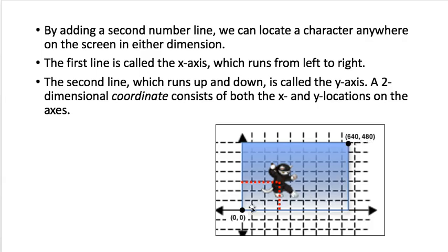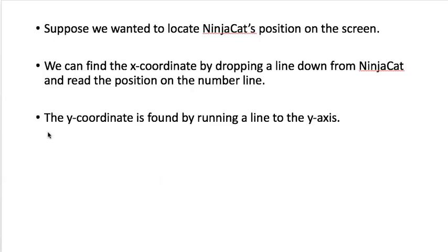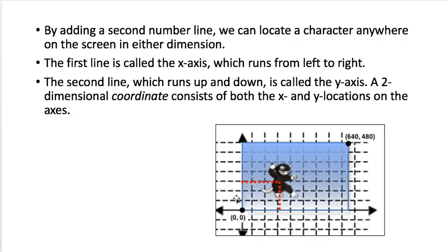If we want to find where ninja cat is on the screen, we can draw a line down to the bottom and see where this is on the x-axis. We can draw a line from his middle over to the side on the y-axis. Those two numbers, x and y, tell you exactly where ninja cat is.